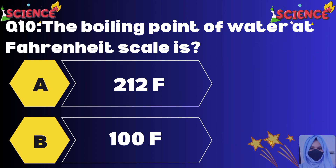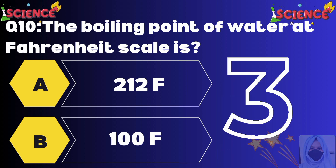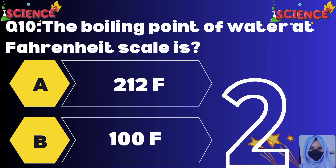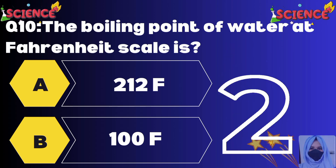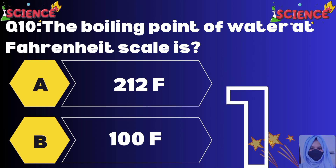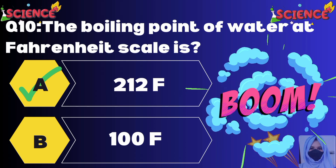The boiling point of water on the Fahrenheit scale is: option A 212, option B 100. The correct answer is option A, 212.